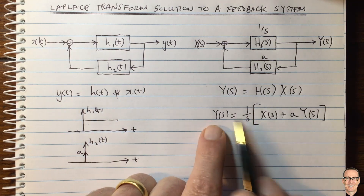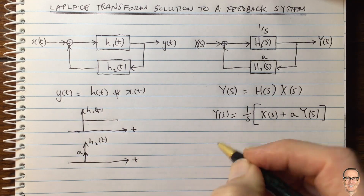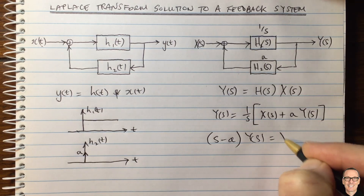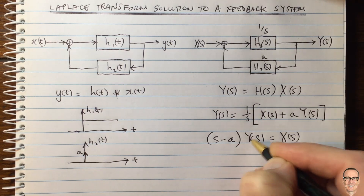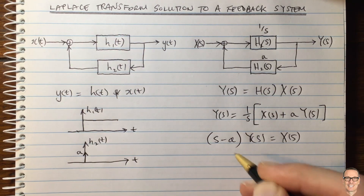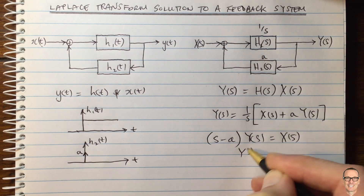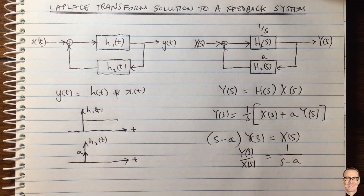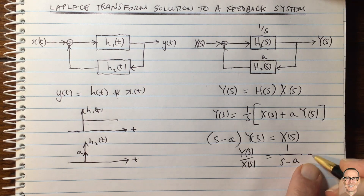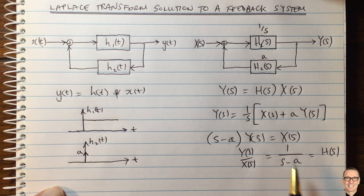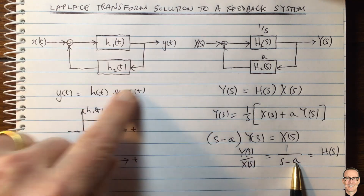If you multiply both sides by S and collect the Y(S) terms on the left-hand side, you get (S minus A) times Y(S) equals X(S). Dividing through gives Y(S) divided by X(S) equals 1 divided by (S minus A). This is our transfer function H(S). We can then take the inverse Laplace transform of this to obtain the overall impulse response.